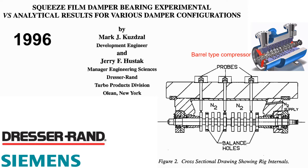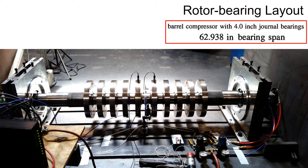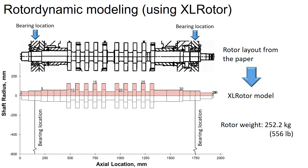This paper provides the test results and the rotor dynamic analysis on barrel type compressors. As you can see in the figures, these barrel type compressors are widely used in the oil and gas industry. Based on the given geometry and dimensions in the paper, you can model the rotor into commercial software. This compressor has four-inch journal bearings and the bearing span is about 63 inches. Here is the photo of the actual rotor with dummy impellers described in the paper, and here is the modeled rotor. I'm currently using XLRotor to model the rotor bearing system.